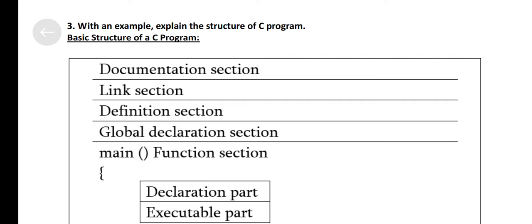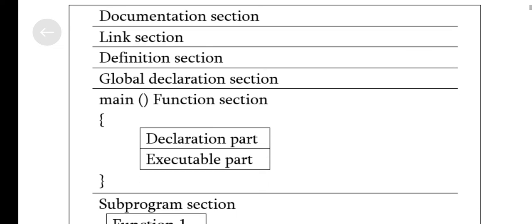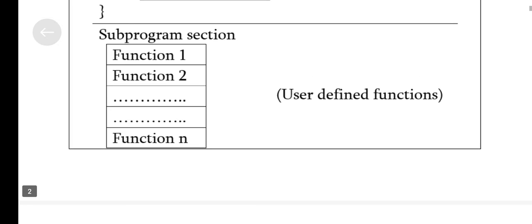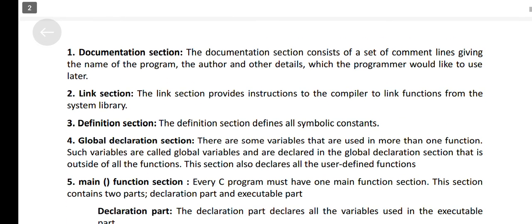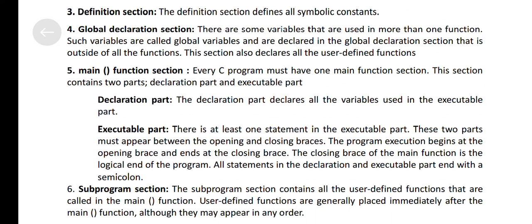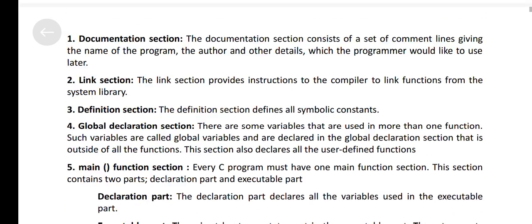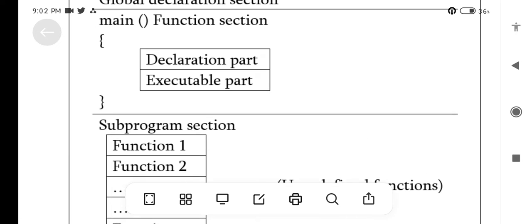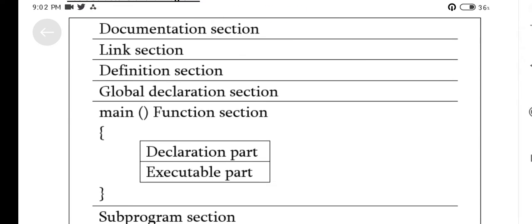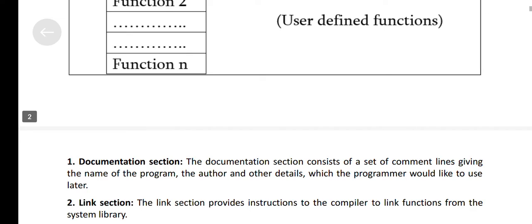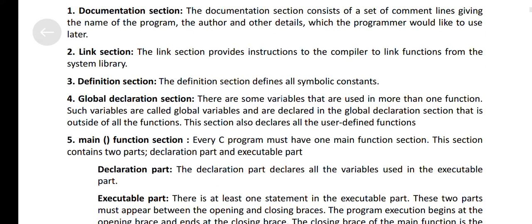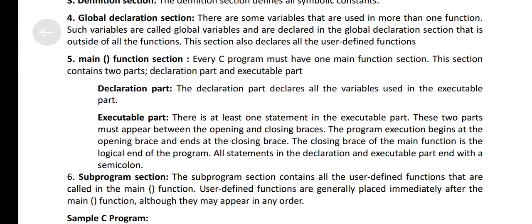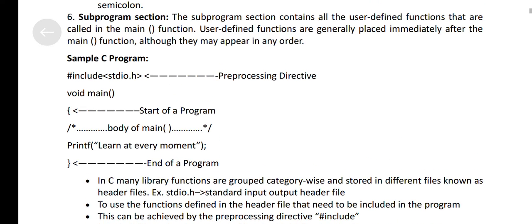With an example, explain the structure of C program. Global declaration section. Fifth question: Main function section. Sixth question: Subprogram section.